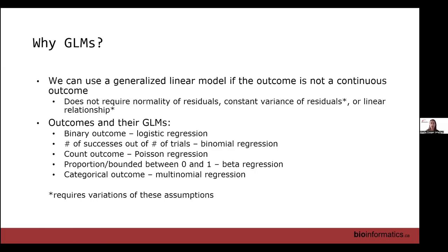With beta regression, you don't actually know the denominator of the proportion. If we do know both the numerator and denominator separately, you can fit a binomial because that provides the model with more information. But if you're just given a column with proportions bounded between zero and one, then we don't know the denominator, so we fit a beta regression.